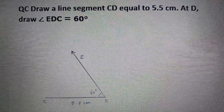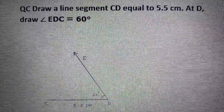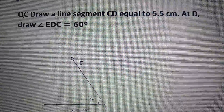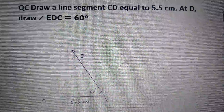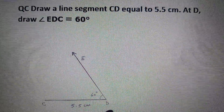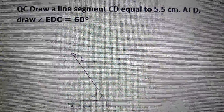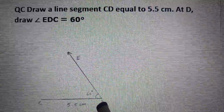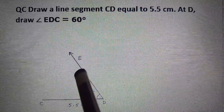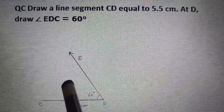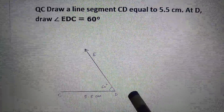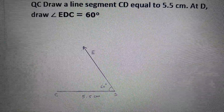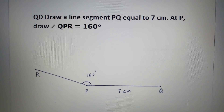Question C: Draw line segment CD equal to 5.5 cm. At D, draw angle EDC equal to 60 degrees. First draw line segment CD equal to 5.5 cm. As the vertex is D, keep the protractor at point D and mark 60 degrees using the outer scale. Join points D and E to get angle EDC equal to 60 degrees.